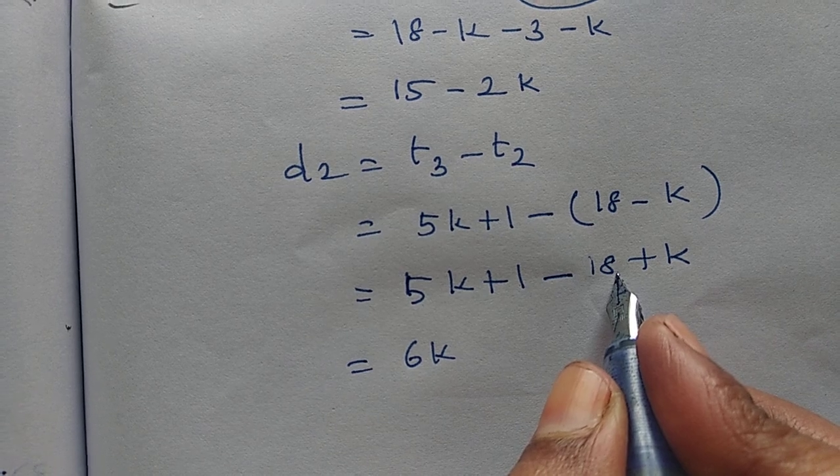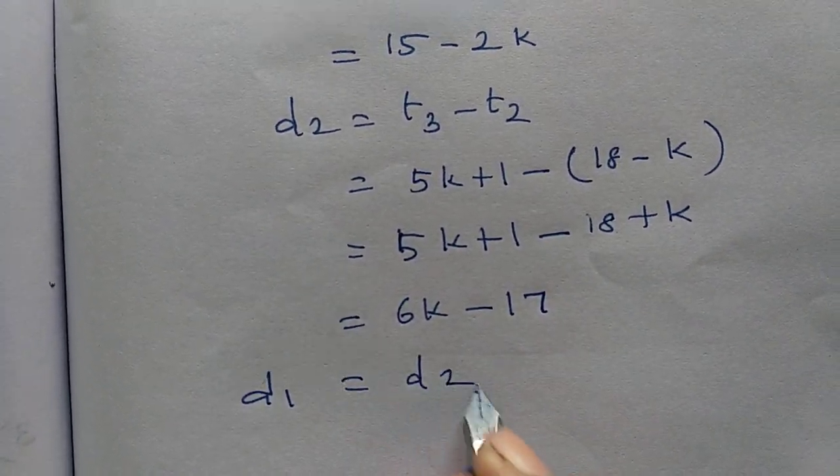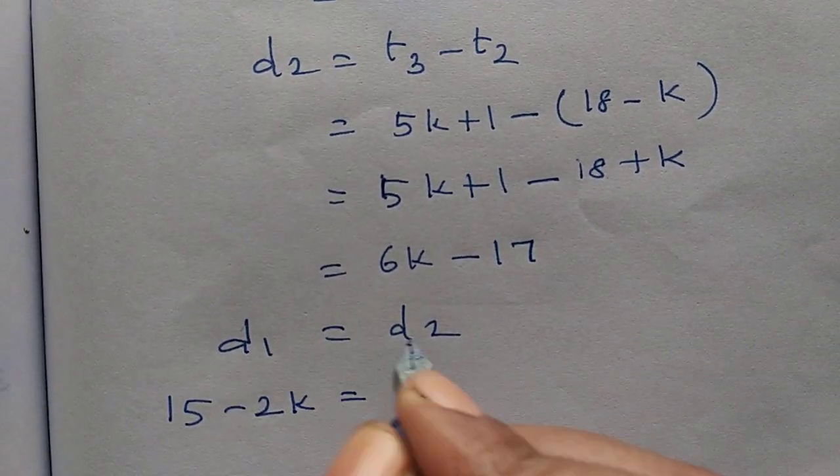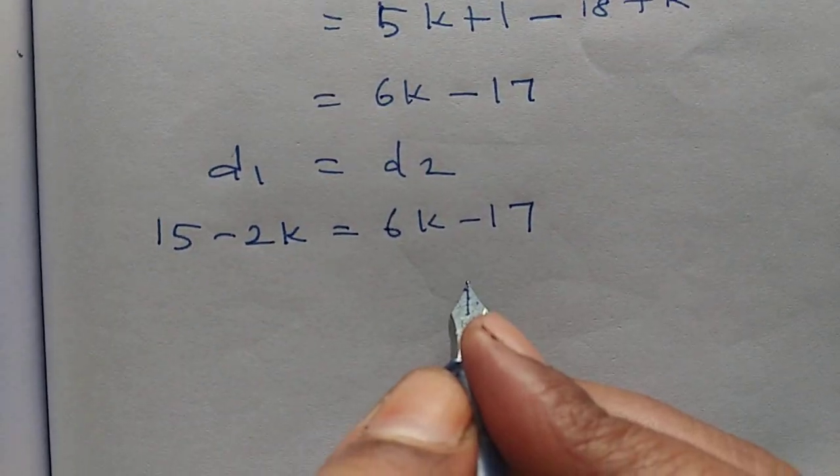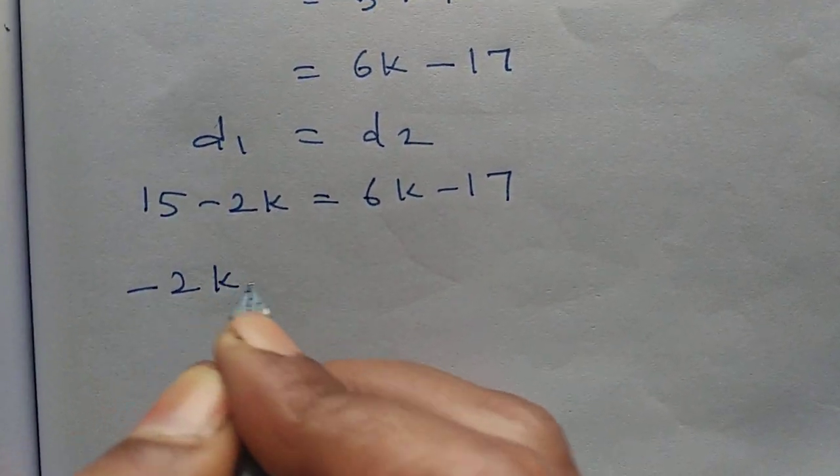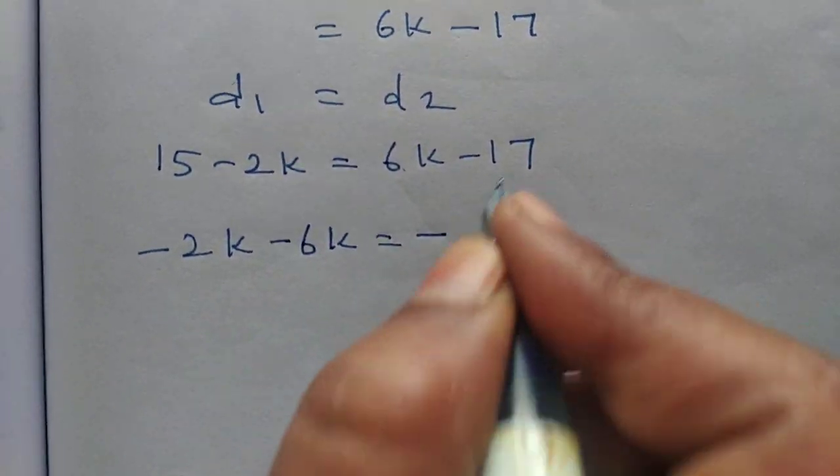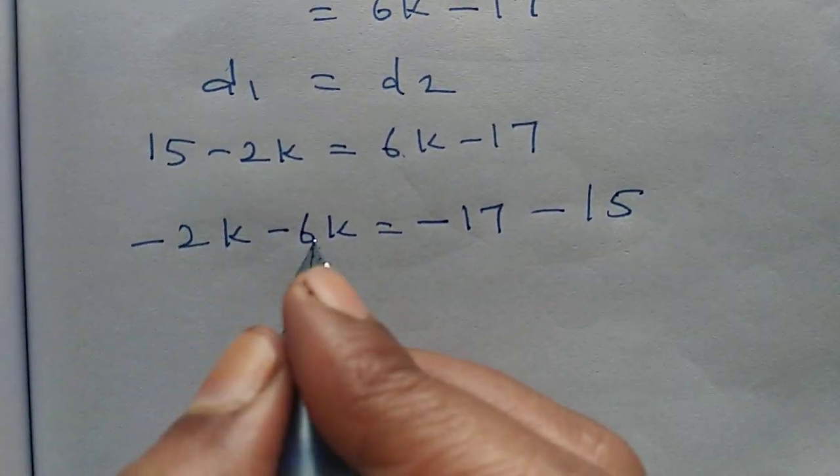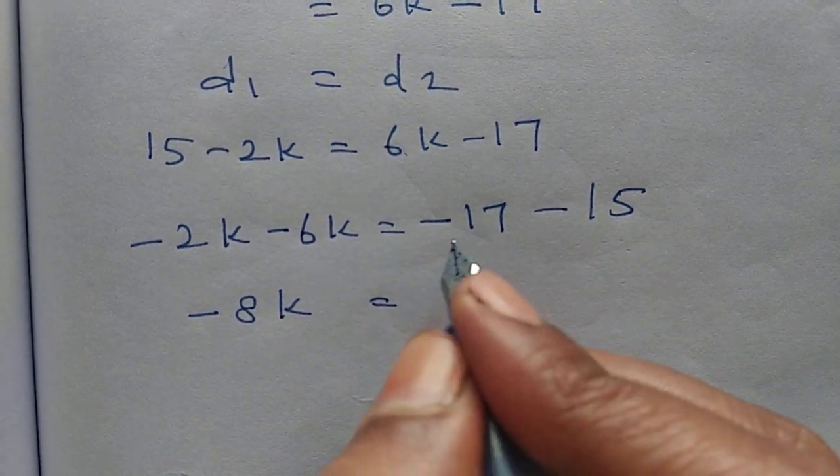d1 equal to d2. d1 is 15 minus 2k, d2 is 6k minus 17. Bring k to one side, numbers to one side. So minus 2k from left side, minus 6k from right side. Minus 17 minus 15 equals minus 32.